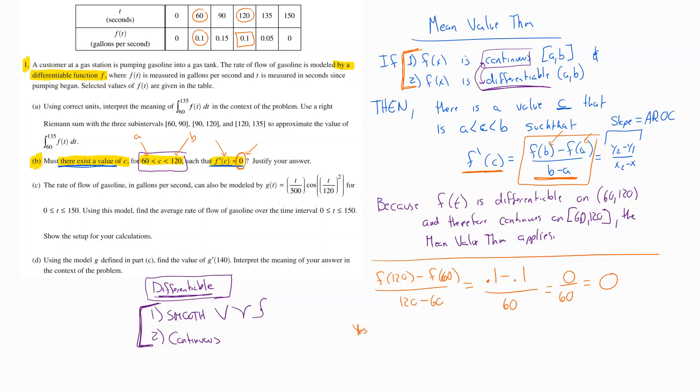So we can now say yes, drawing our conclusion, is it possible that this c value must exist? Yes, there is a c value on that interval 60 to 120